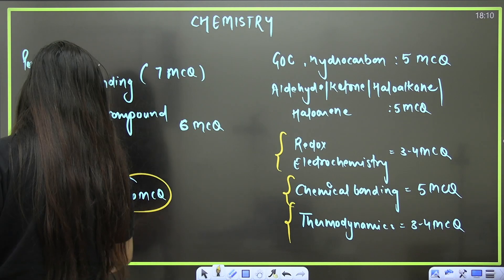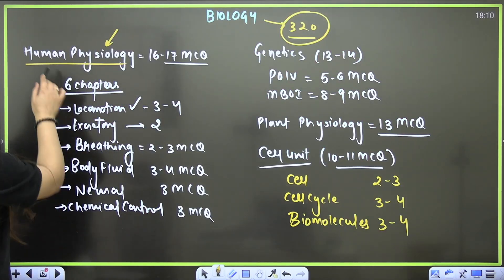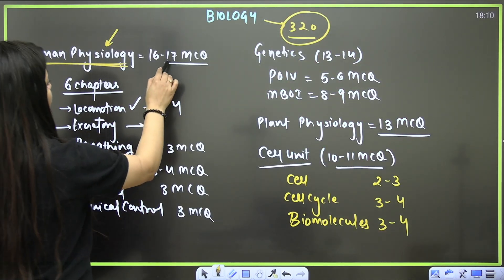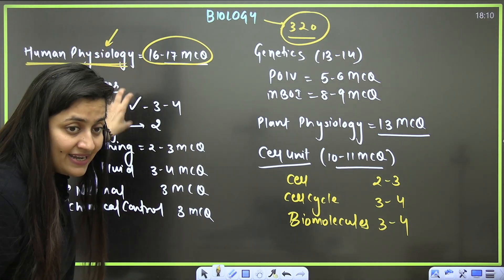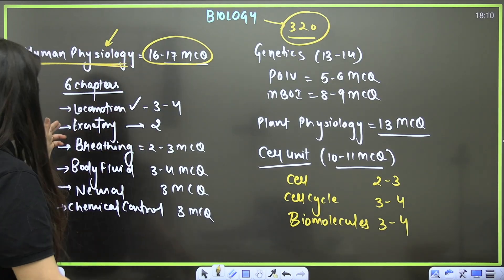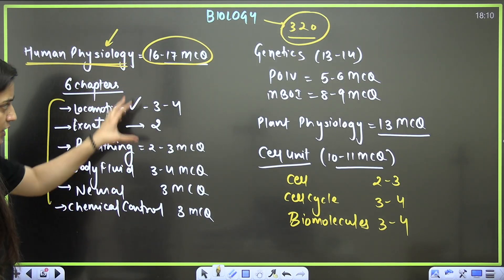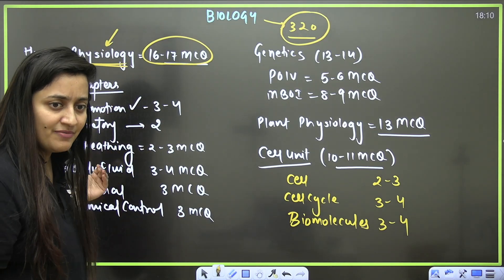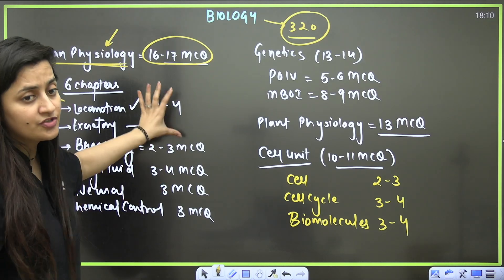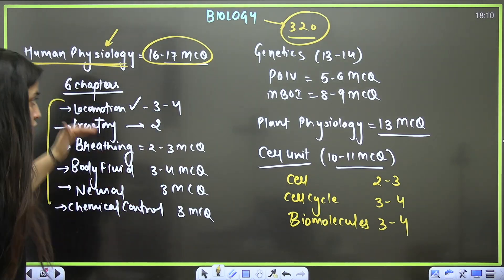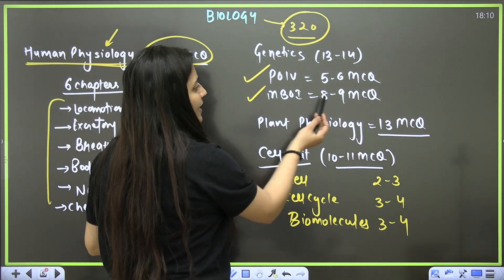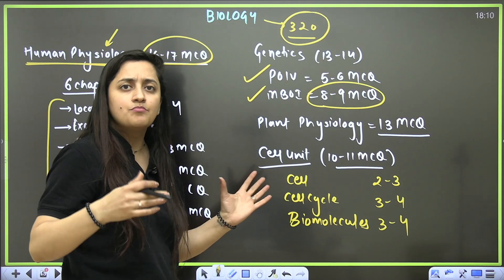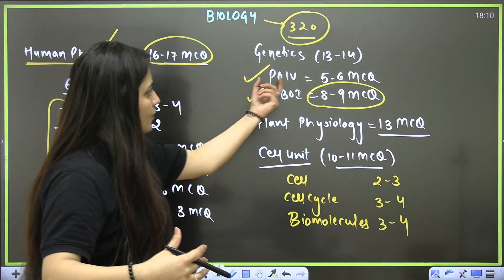Let's talk about the biology part. Human physiology is very important—16 to 17 MCQs approximately. But let me tell you, there's no uniform distribution. It's as per the paper analysis, previous paper analysis, but uniform distribution from human physiology is not there. All six chapters are equally important. Genetics, POIB, MBOI—eight to nine questions. It can be in the range seven, eight, nine. Principles of inheritance—again five to six MCQs.